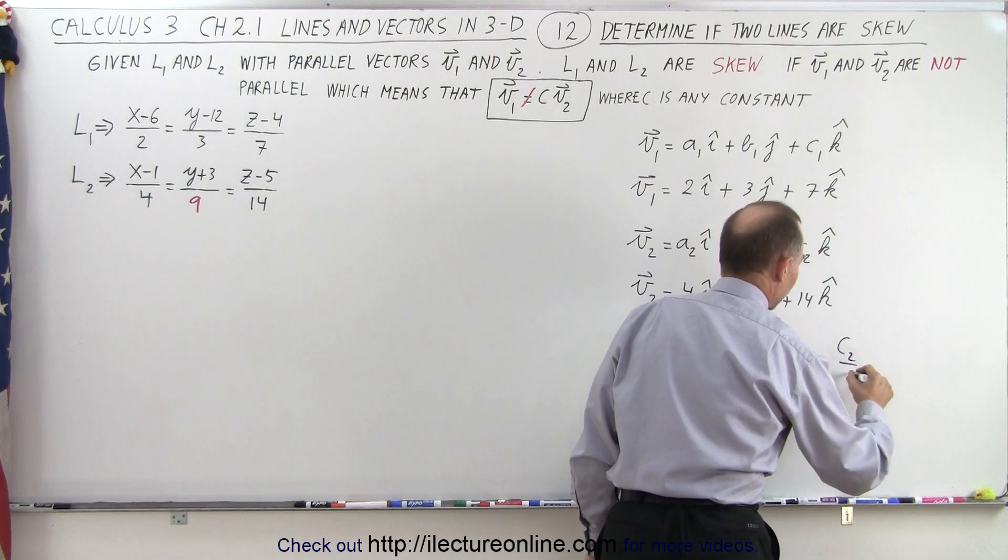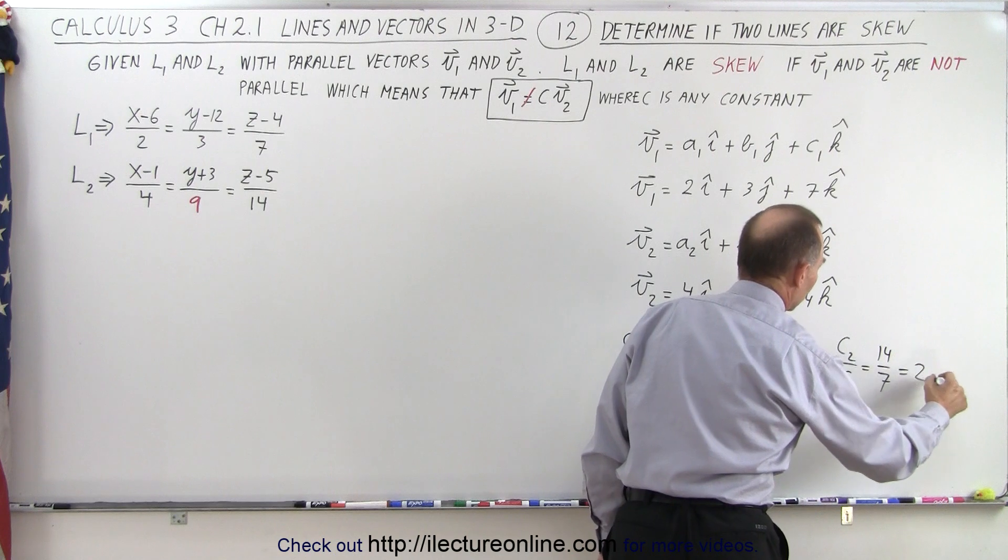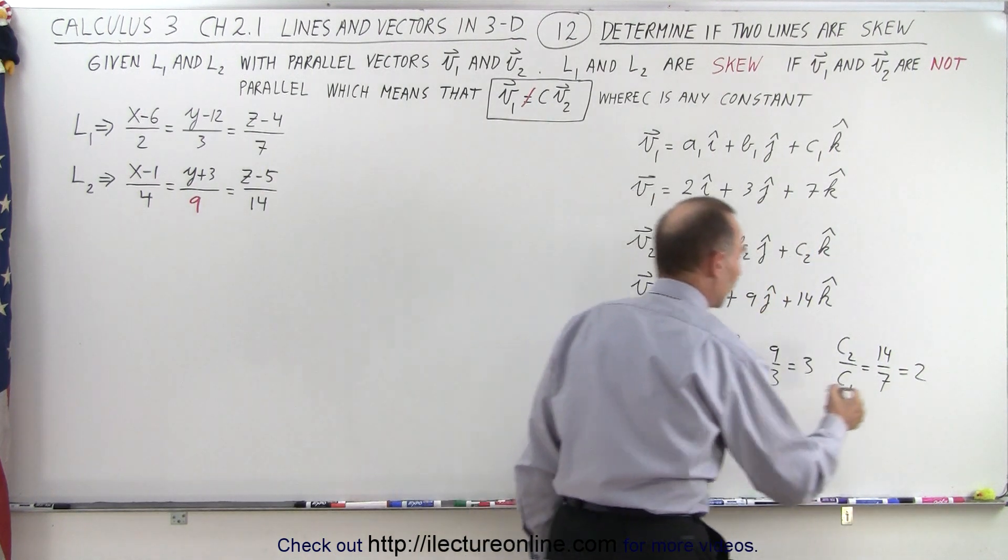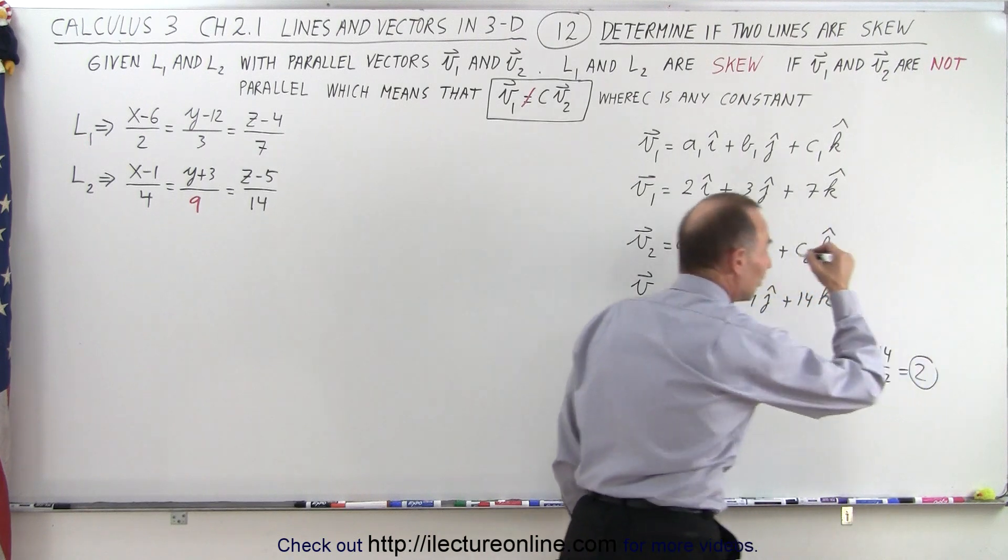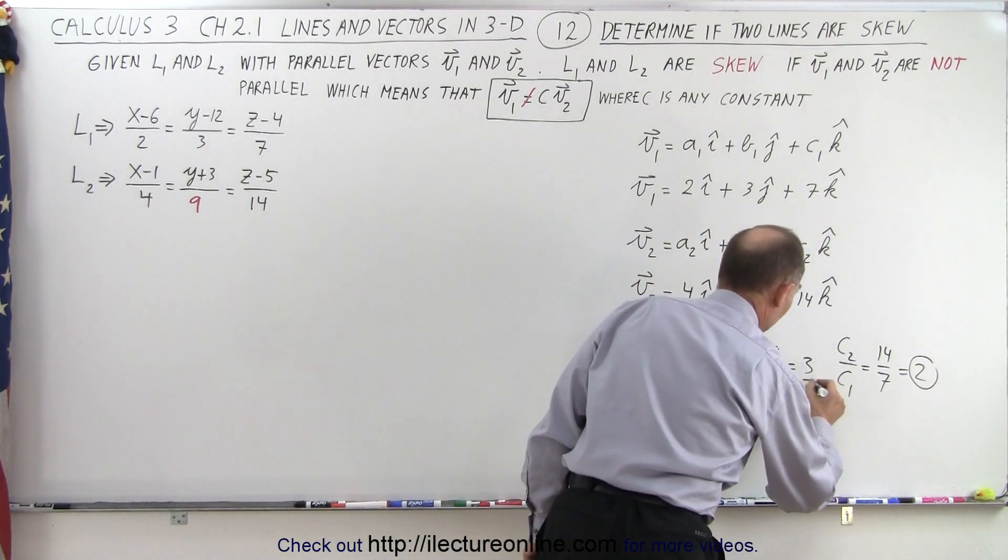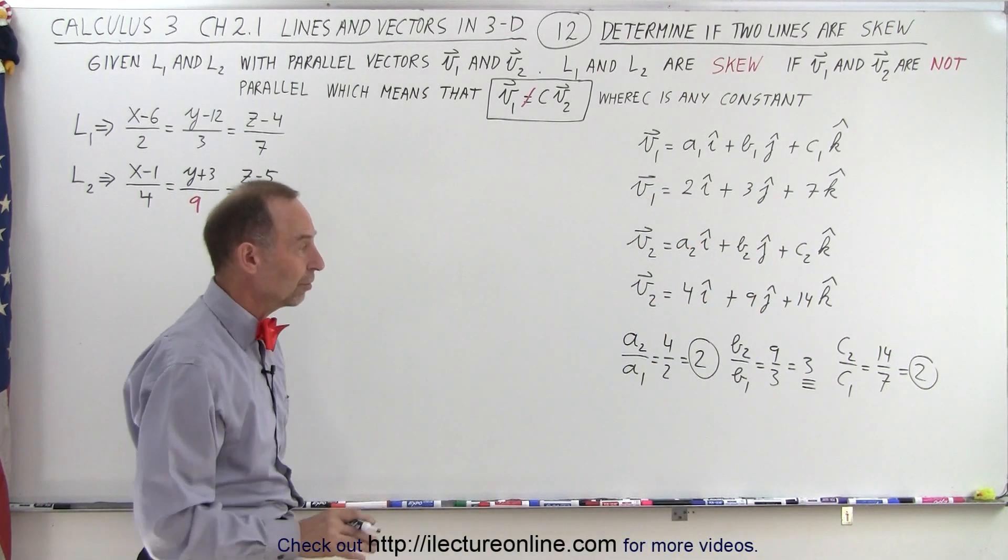And C2 divided by C1 is equal to 14 divided by 7, which is equal to 2. So notice that the ratio for the X components and the ratios for the Z components are indeed the same. But the problem is that the ratio of the Y components are not the same as the ratio of the X and the Z components.